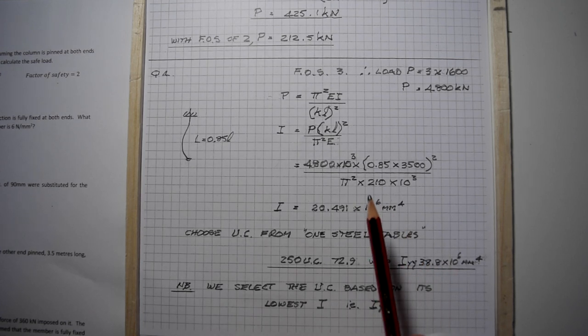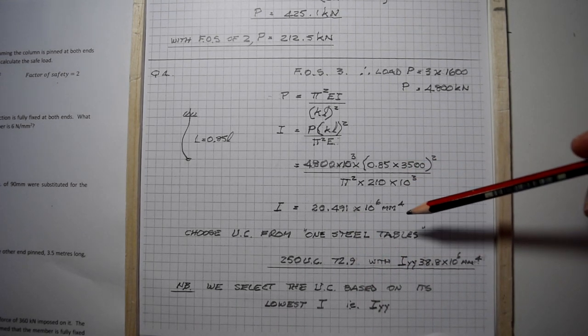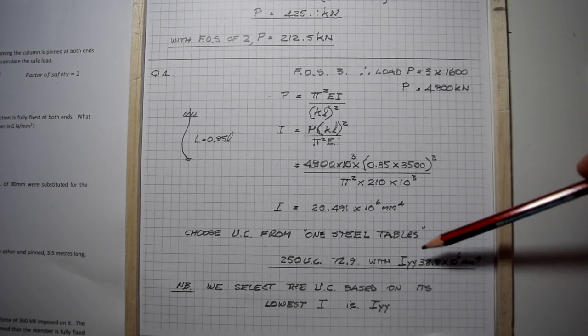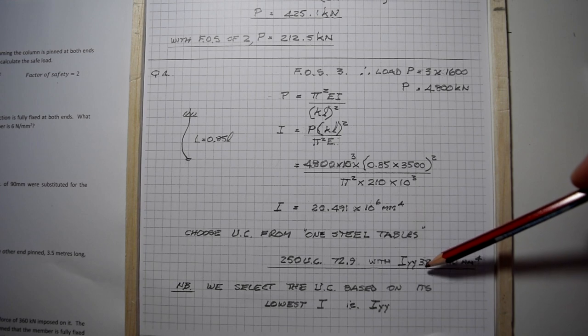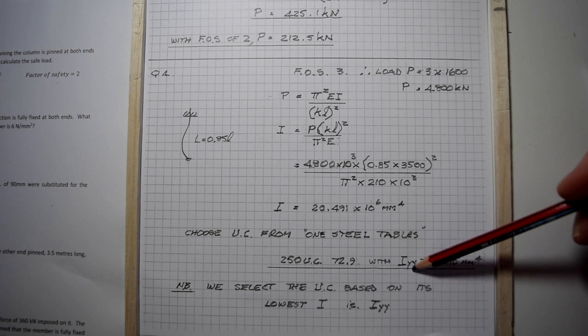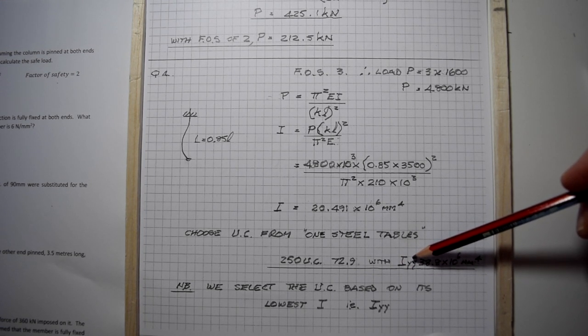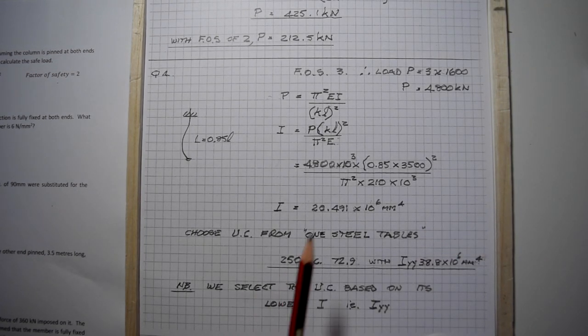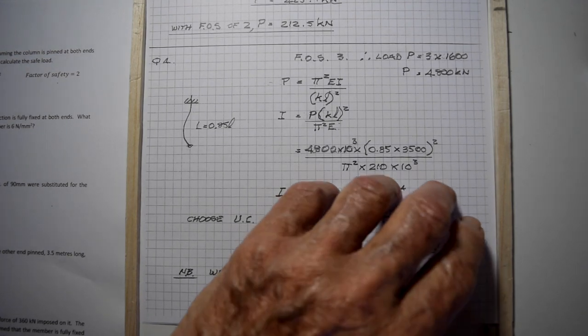That's the closest we can get because there is a very small selection of universal columns. We've had to escalate quite a lot to 38.8, there's nothing in between. Remember always you use the least moment of inertia because the column will buckle about the least moment of inertia - I_yy which is always smaller than I_xx.